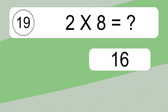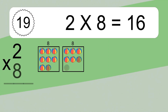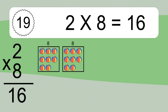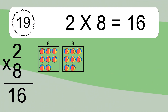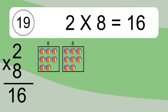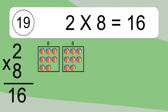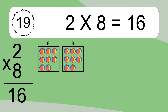2 times 8 equals what? 2 times 8 equals 16. We have 2 boxes, and each box has 8 colorful balls inside. If you count all the balls in all the boxes together, you will have 2 times 8 balls. This equals 16 balls.